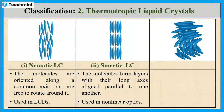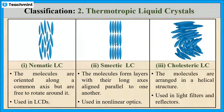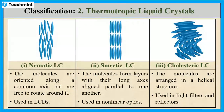The third type is cholesteric liquid crystals. Here the molecules are arranged in a helical structure. This type of liquid crystal is used in optical applications such as light filters and reflectors.